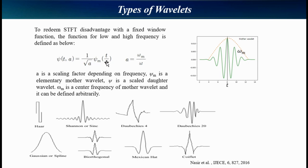Psi m is an elementary mother wavelet. Psi a is a scaled daughter wavelet. Omega m is a center frequency of a mother wavelet, and it can be defined arbitrarily. There are many wavelets to increase the resolution, as shown in these figures.